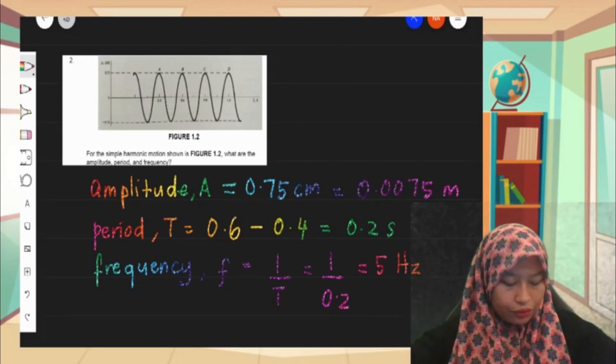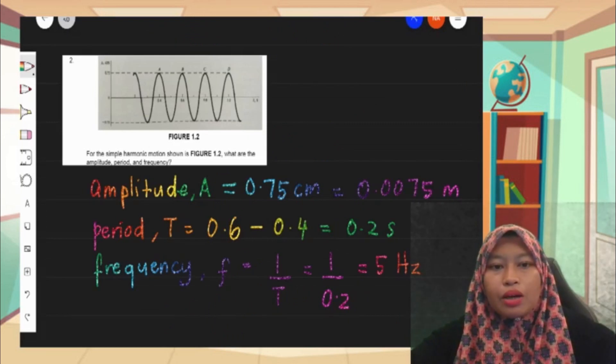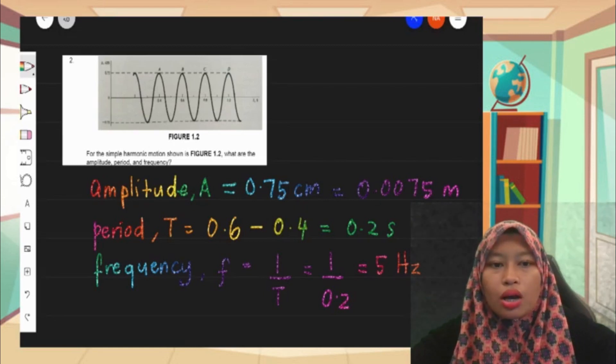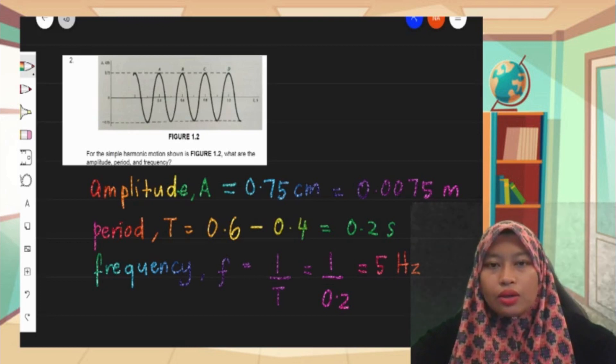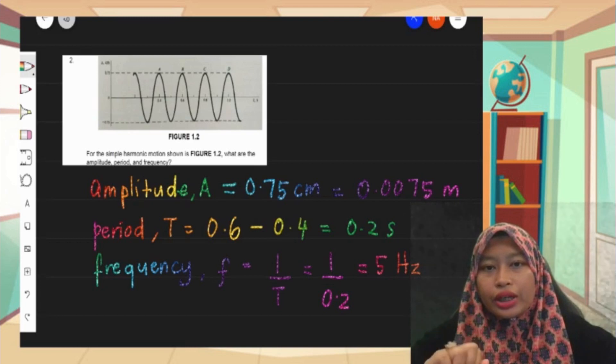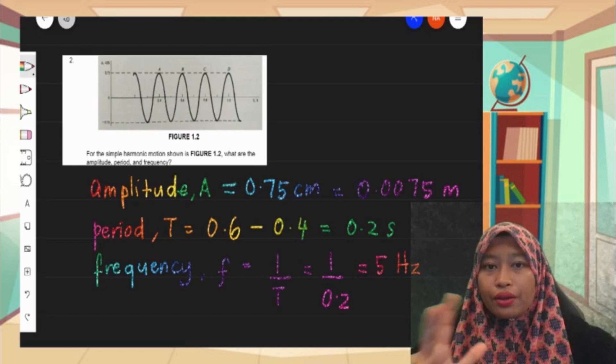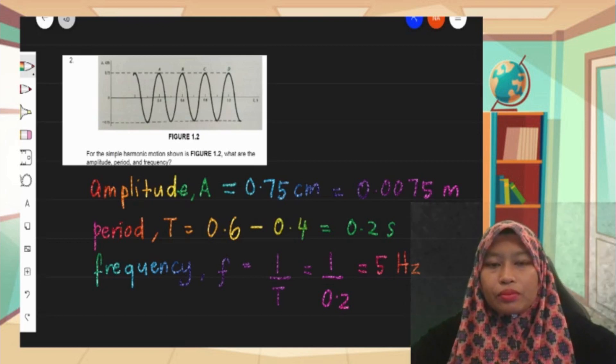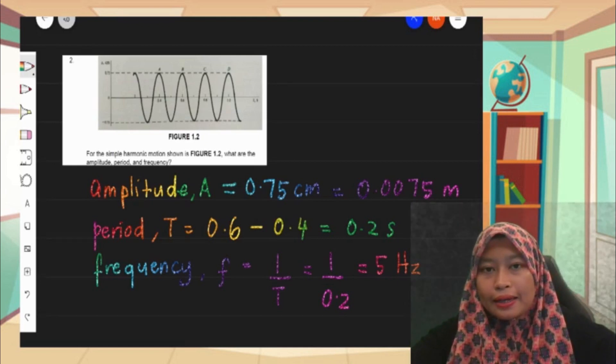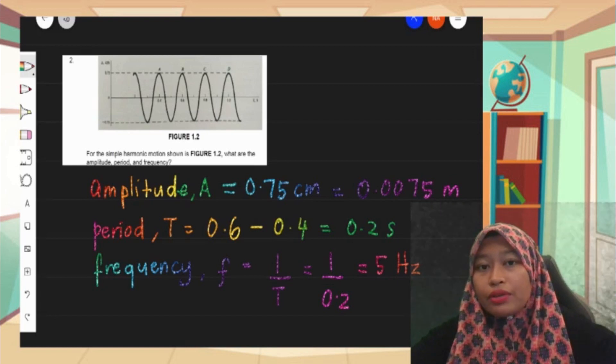For question number two, the question asks for the simple harmonic motion shown in figure 1.2, what are the amplitude, period, and frequency? So here we have three different questions to answer: the first one is amplitude, period, and the third one is frequency. When we find a graph in the question,